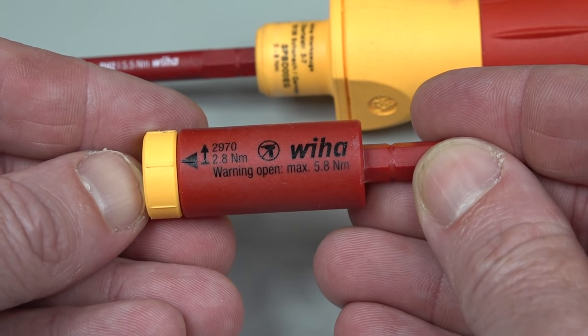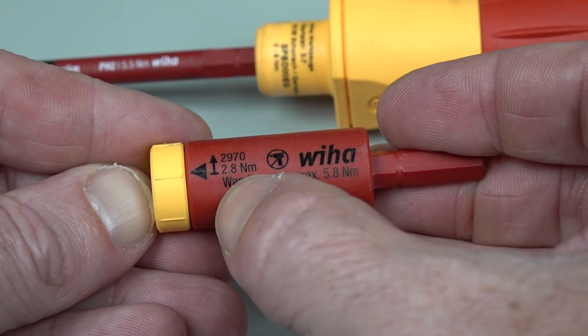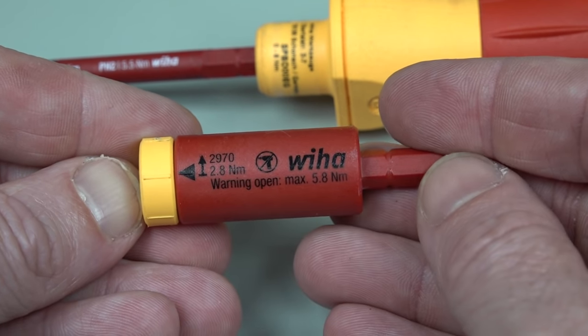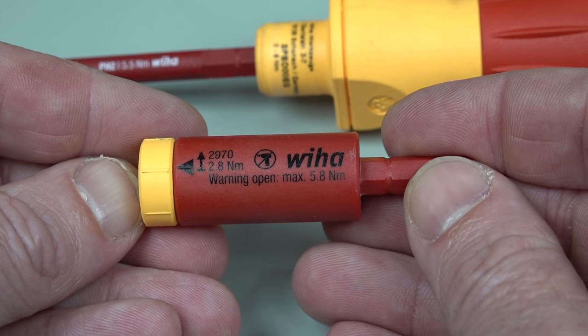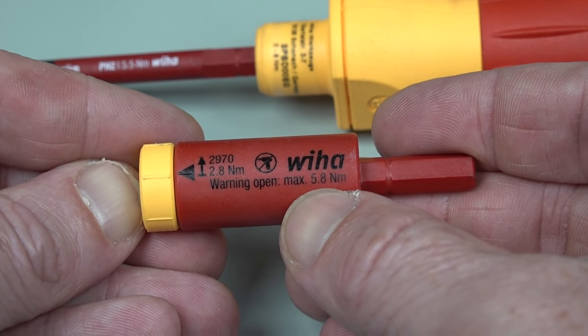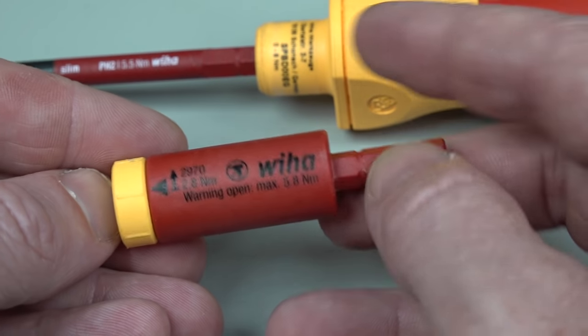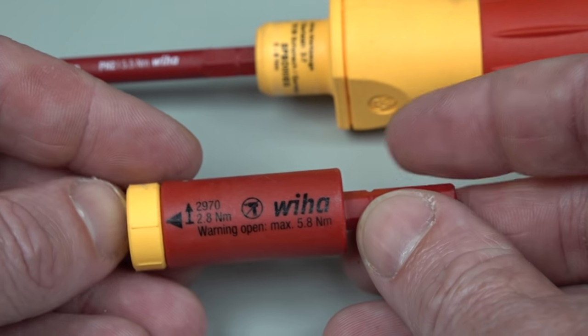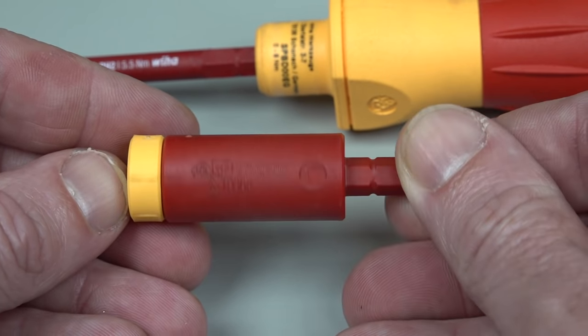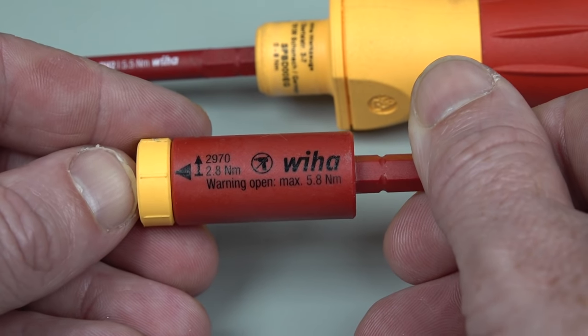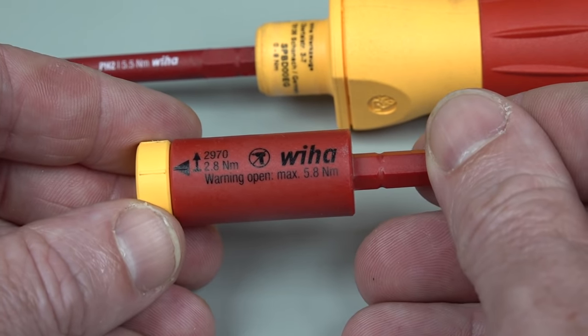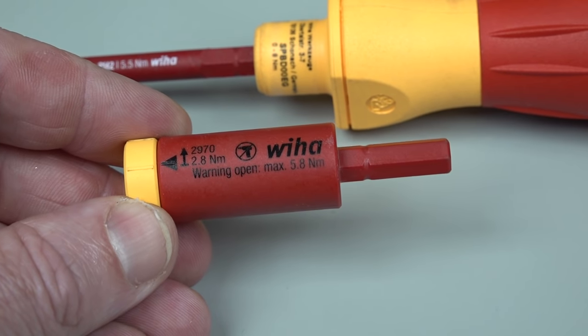It's what's called a Wiha Easy Torque adapter, and you can see it's actually rated for 2.8 newton meters on there. It's the 2970 type max 5.8 newton meters, so if you use this with the screwdriver, it's going to be less than the nominal 8 newton meters, but it's actually a torque adapter.